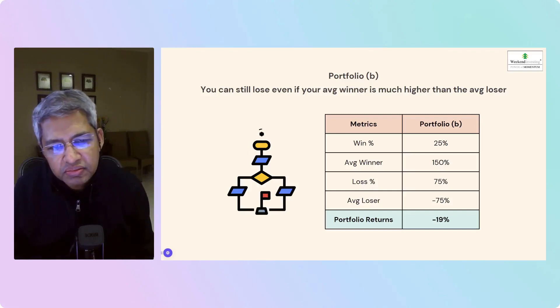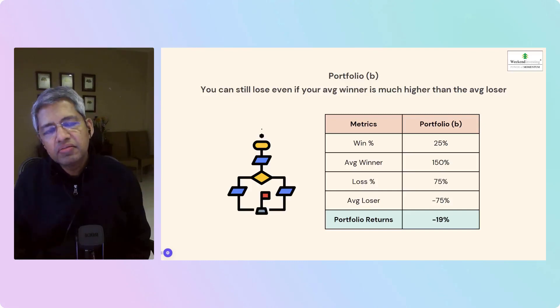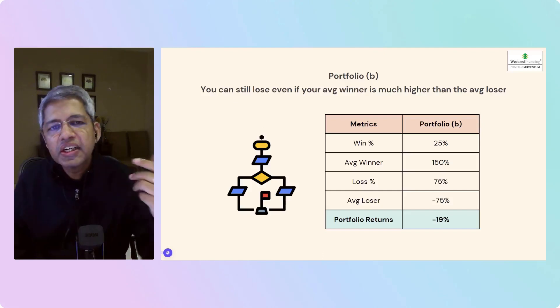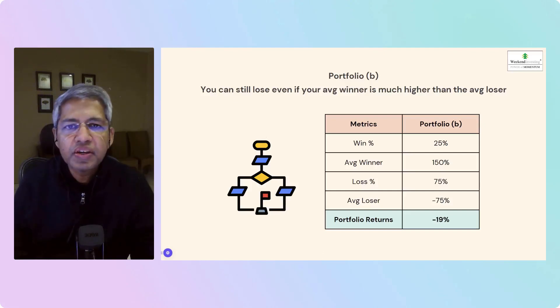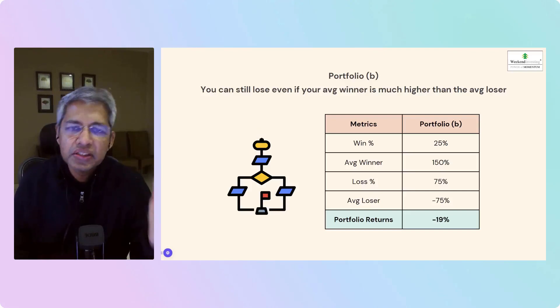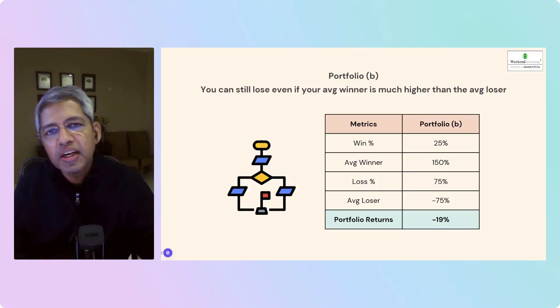Next portfolio, Portfolio B: your average winner is much higher than the average loser. Let's say we win 150% whenever we win but we lose 75% whenever we lose. But our winning percentage is low here, so only 25% of the time we are winning. So 100 trades, 25 times we are winning, we make 150% each time. 75% of the time we are losing, we lose 75% on each trade. We end up with a portfolio return of minus 19%.